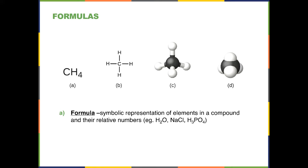Sodium chloride, or table salt, has one sodium ion and one chloride atom. Phosphoric acid has three hydrogen atoms, one phosphorus atom, and four oxygen atoms.